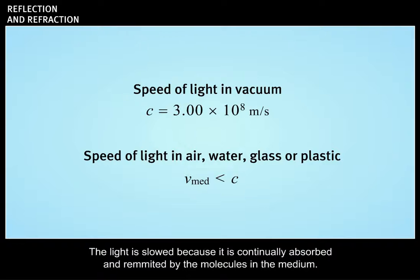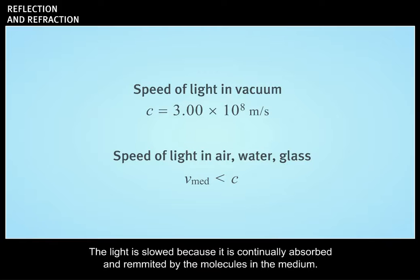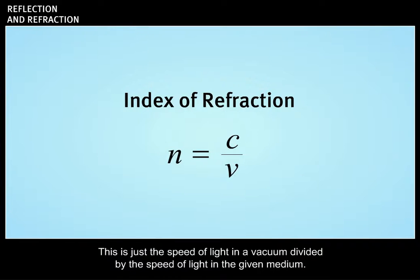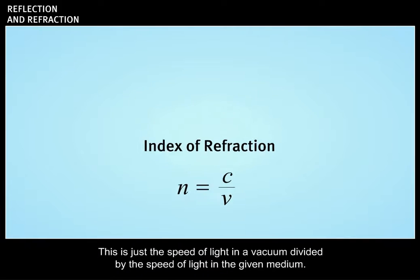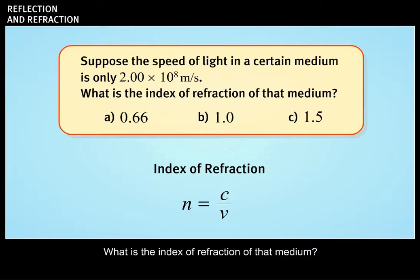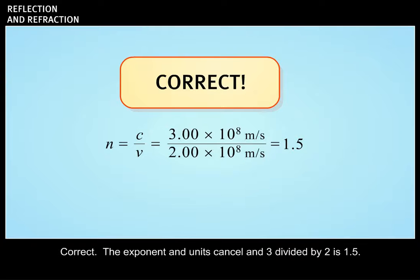The light is slowed because it is continually absorbed and remitted by the molecules in the medium. How much the light is slowed is described by the index of refraction, a unitless number abbreviated as n. This is just the speed of light in a vacuum divided by the speed of light in the given medium. Suppose the speed of light in a certain medium is only 2.00 times 10 to the 8 meters per second. What is the index of refraction of that medium? Correct. The exponent and units cancel, and 3 divided by 2 is 1.5.